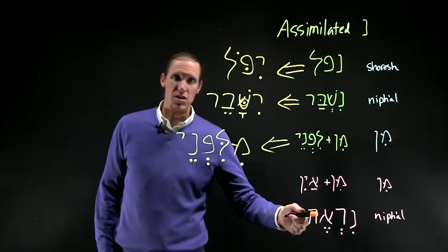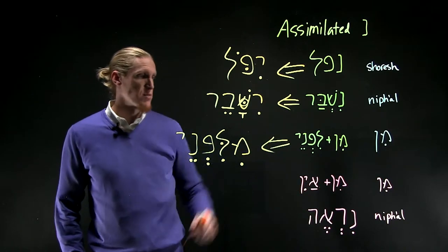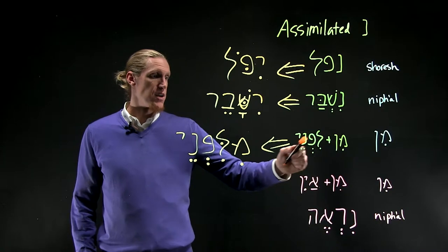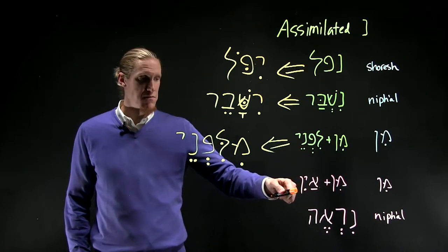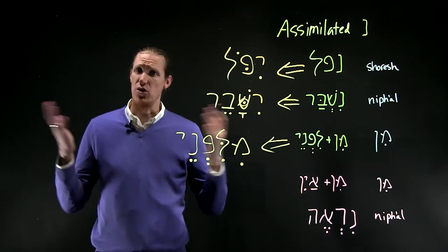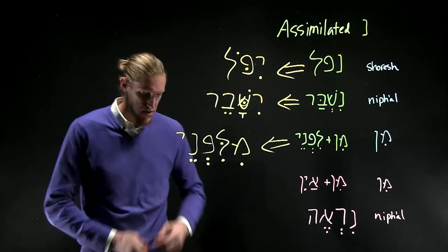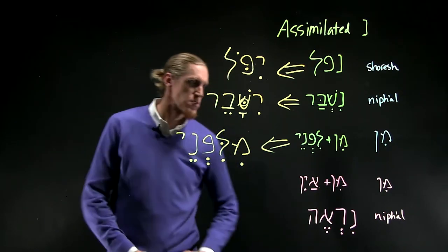So here are a couple of similar situations as above. Here we have the preposition min connected to the word ein, which is the question word where. When that happens,